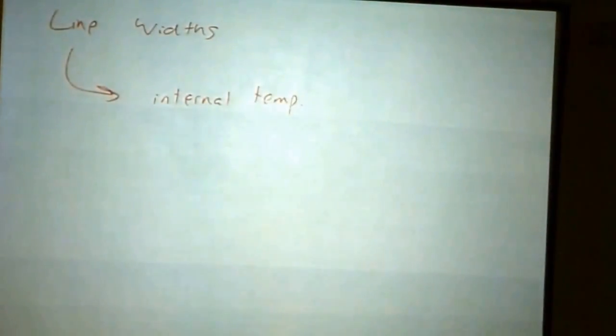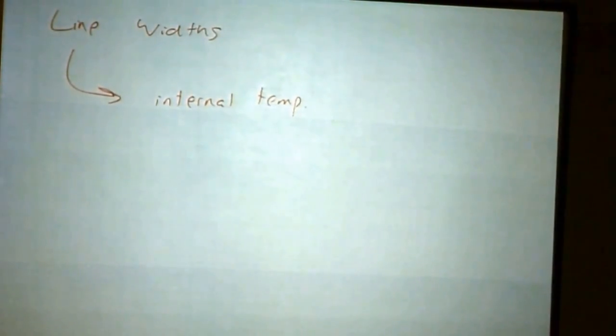If it's a hotter cloud, there's going to be faster motions in there, and a broader line. A cooler cloud, the narrower the line. So the width of that little itty-bitty line can tell us the temperature.